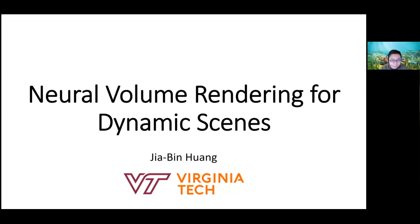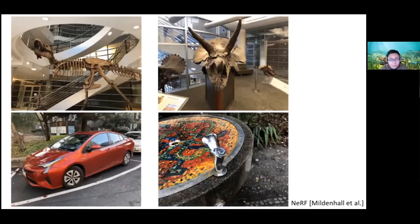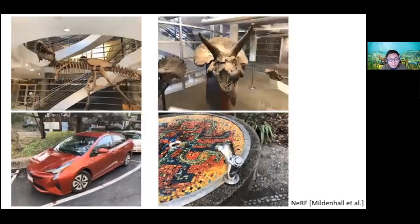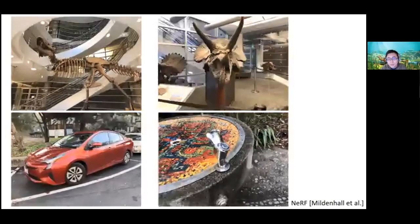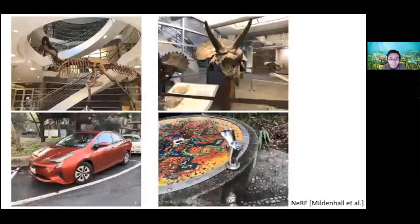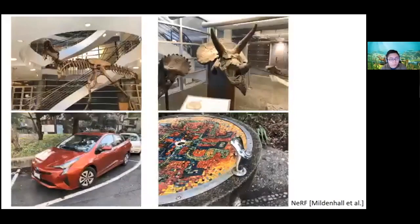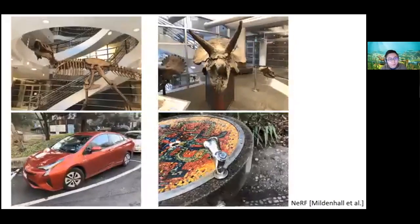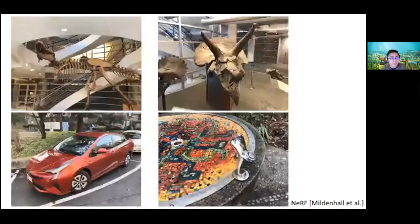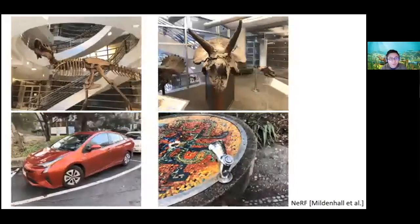If you haven't been living under a rock for the past 10 months, you've probably heard about the explosion of Neural Radiance Fields. The task is that you take multiple images of a static scene — either multiple images or a short video — and then build a model that can produce photorealistic novel views of the same scene. The visual quality is quite amazing; it can handle complex scene structure, refraction, highlights, and view-dependent effects remarkably well.